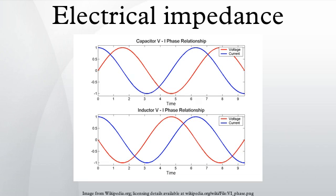Measurement: the measurement of the impedance of devices and transmission lines is a practical problem in radio technology and others. Measurements of impedance may be carried out at one frequency, or the variation of device impedance over a range of frequencies may be of interest. The impedance may be measured or displayed directly in ohms, or other values related to impedance may be displayed. For example, in a radio antenna the standing wave ratio or reflection coefficient may be more useful than the impedance alone. Measurement of impedance requires measurement of the magnitude of voltage and current, and the phase difference between them. Impedance is often measured by bridge methods, similar to the direct current Wheatstone bridge, where a calibrated reference impedance is adjusted to balance off the effect of the impedance of the device under test.